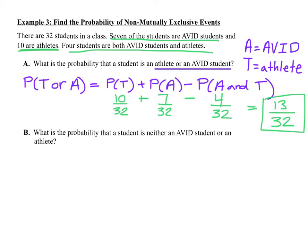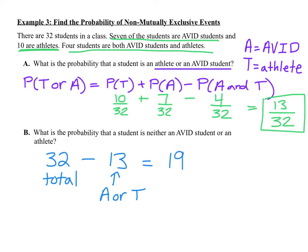Now let's look at the probability that a student is neither an avid student nor an athlete. We can use our answer from part A to help. There are 32 total students, and we just calculated that 13 are either avid students or athletes. So 32 minus 13 leaves 19 students who are neither. That means there's a 19 out of 32 chance that you choose a student who is neither an avid student nor an athlete.